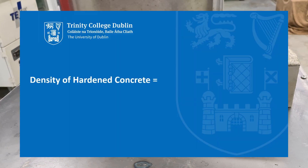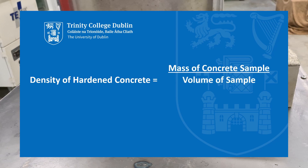As before, density will be determined by dividing the mass of the sample by the volume of the sample. The result will be expressed in terms of kilograms per meter cubed.